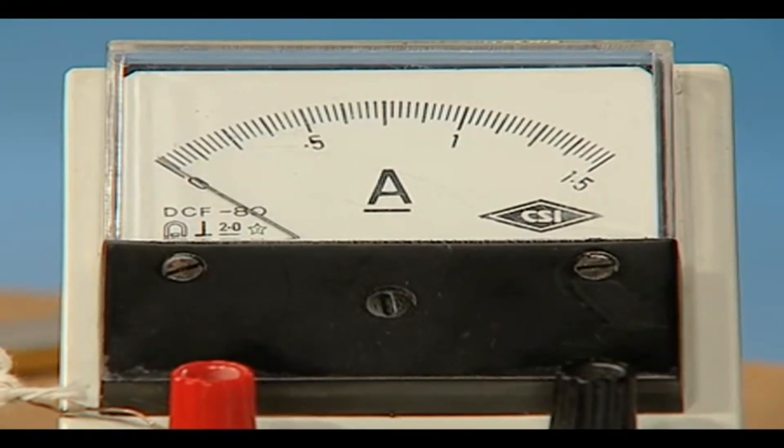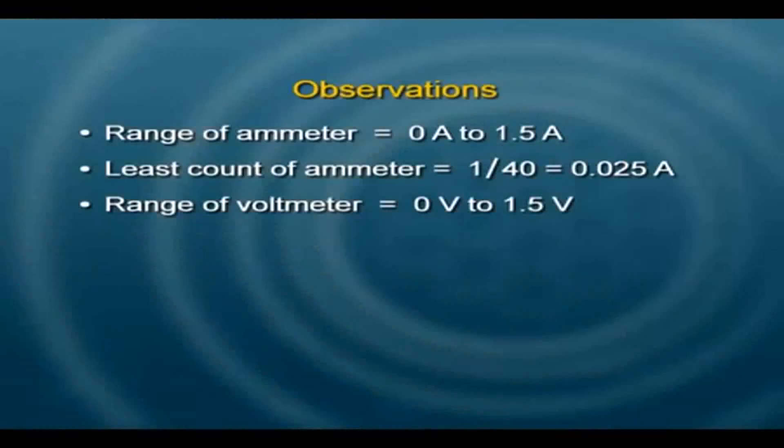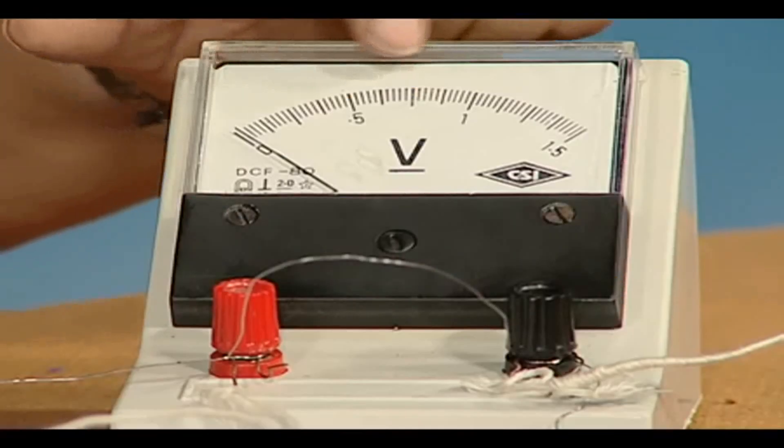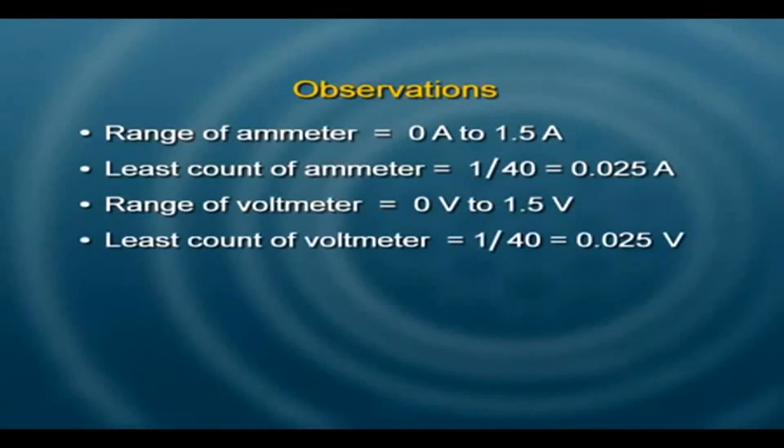Likewise, look at this voltmeter. The range is from 0 to 1.5 volts and there are 40 divisions again between 0 and 1. So my least count for this meter as well is 0.025 volts.